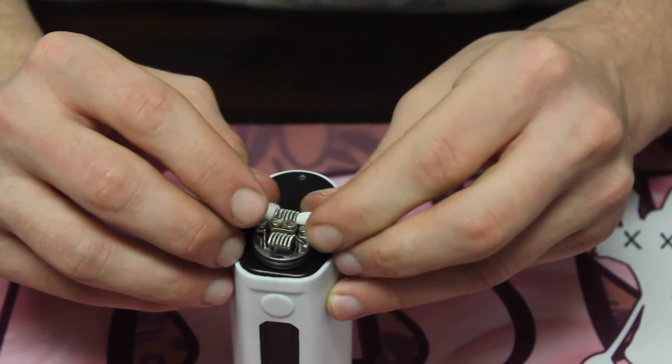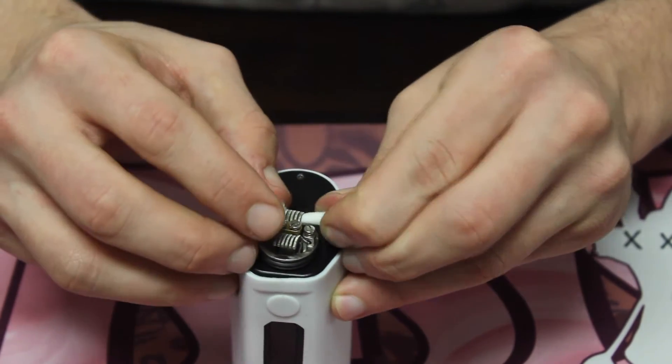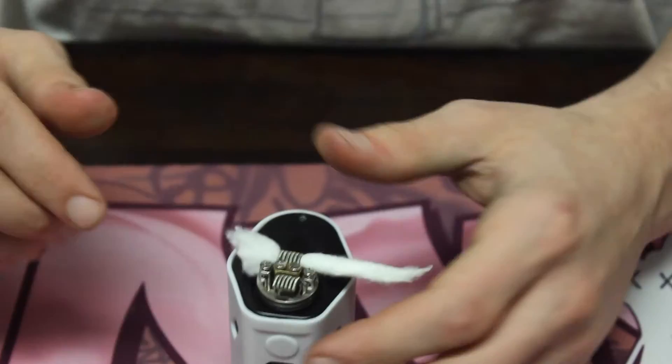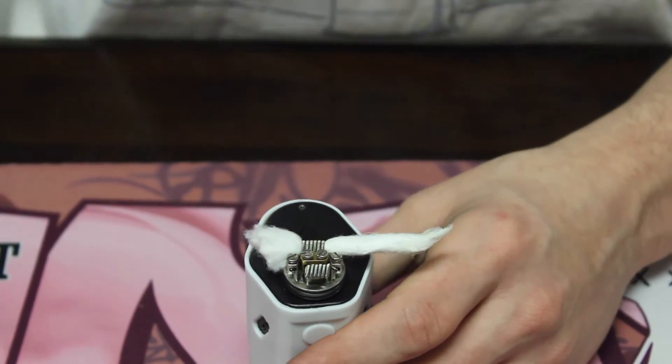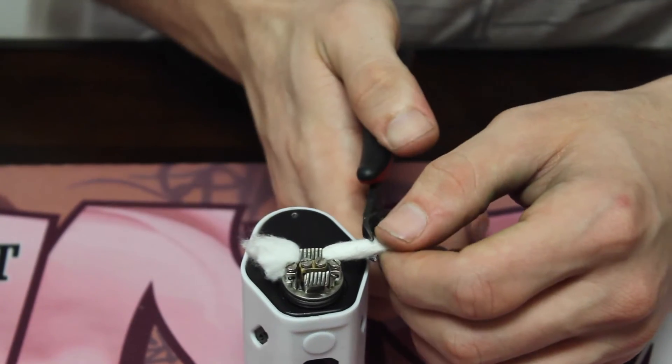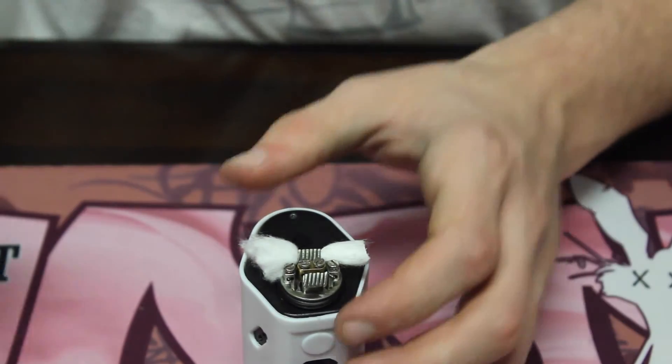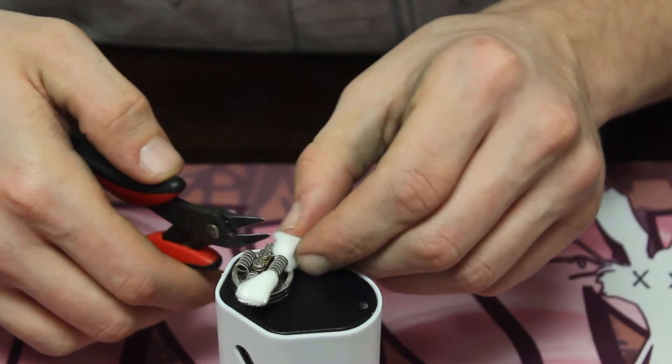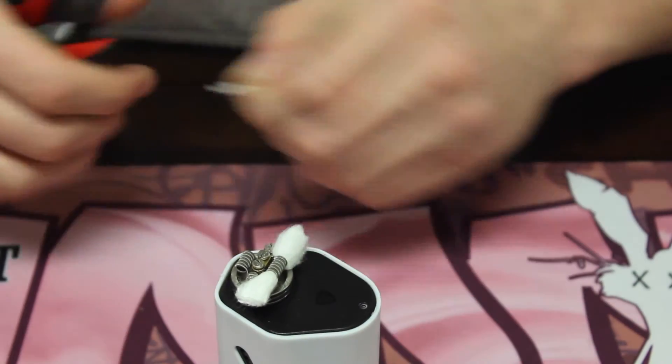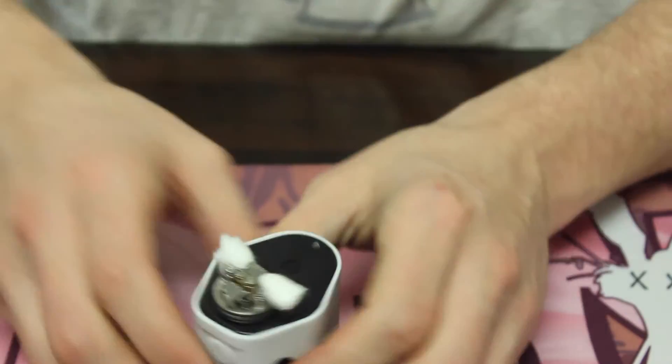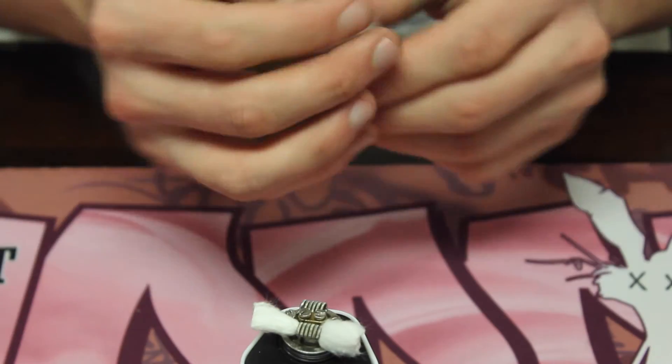You're gonna get to the point where it looks kinda like a bow tie. And then I'm gonna take my flush cutters and I'm just going to trim a little bit of that cotton off. You don't want too much cotton because it will reflect badly on the flavor, because you'll have too much of a cotton taste at first. Doing the same thing for the other side.